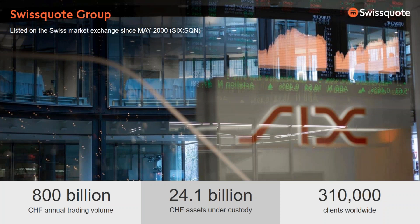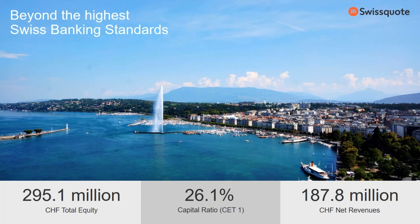At the moment, we have a market capitalization of about 750 million francs. And also today, the share rose 6% — it is amazing. In 2017, starting from January 2017, the share rose more than 110%. We have more than 24.1 billion in franc assets under custody and over 310,000 clients worldwide. We are beyond the highest Swiss banking standard with a capital ratio of 26.1.